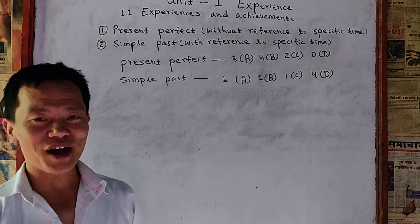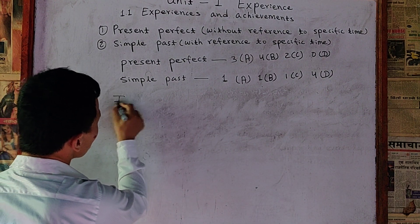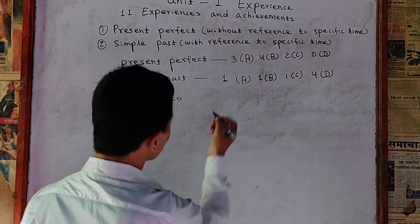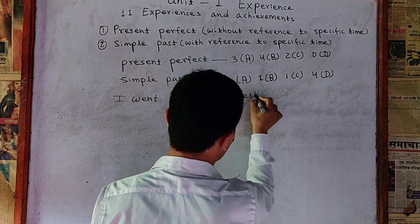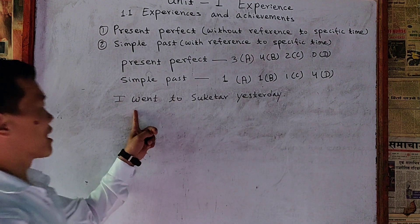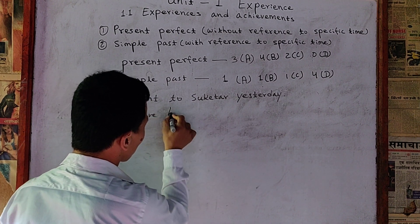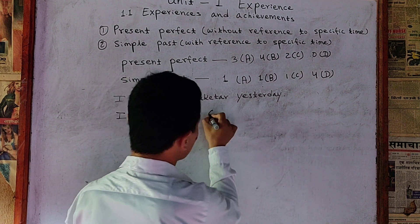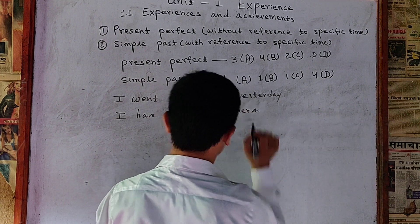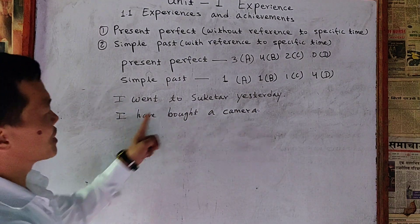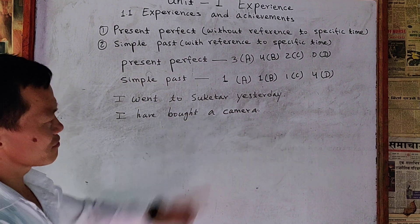I give you my own examples, only two examples. I went to Sukhata yesterday. I have bought a camera. Here I have given two examples — one example from simple past, and another example from present perfect.